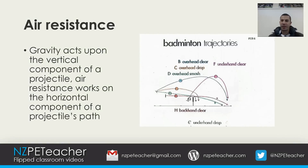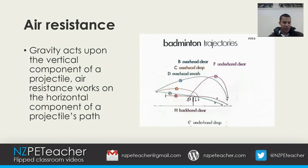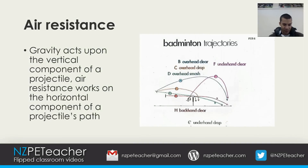We can see this clearly when we consider the flight path of a badminton shuttlecock. Because of the specific design of the shuttlecock — the materials used, the shape, and the weight — it offers a great deal of air resistance. You can clearly see that when the shuttlecock begins to slow, air resistance has a significant effect on the trajectory or flight path of the projectile. Even on shot types that utilize a higher speed of release, such as the smash and overhead drop, you can still see the effects of air resistance towards the end of its flight path.